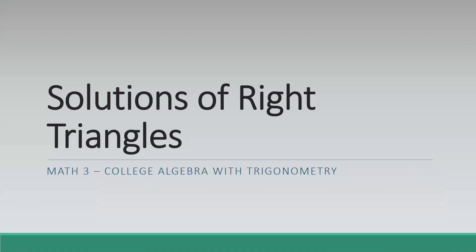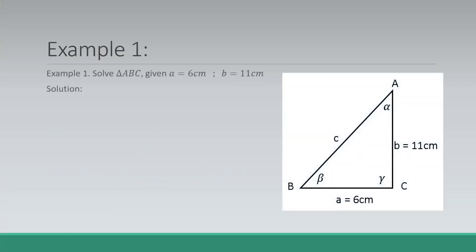Hi everyone! For today's topic, we're going to deal with the solutions of right triangles. Example 1: we have to solve for triangle ABC given side A which measures 6 centimeters and side B which measures 11 centimeters. So we have to solve for the hypotenuse and these two angles.